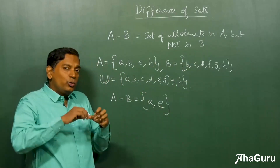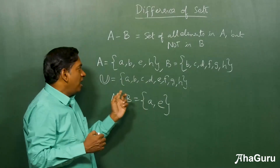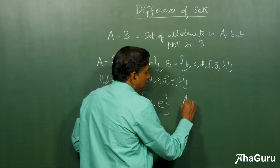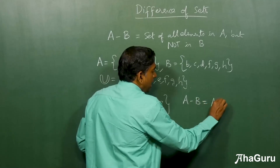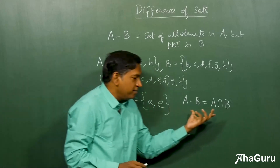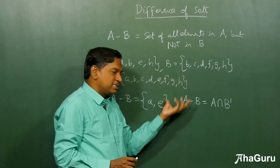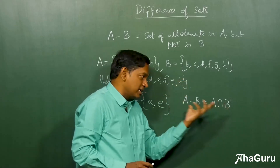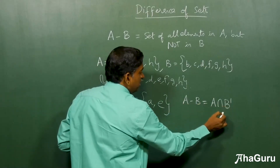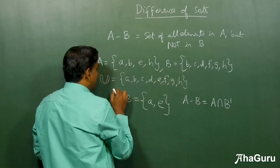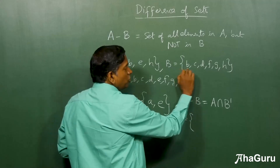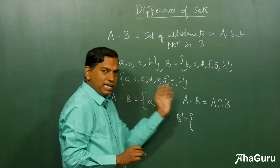Now when doing algebra of sets and we want to simplify, how do we simplify A minus B? We are going to show that A minus B is nothing but A intersection B-bar. We are going to demonstrate it with this example, and since it's general you can take this as a general result. To find A intersection B-bar, we first need B-bar. B-bar is the set of elements not in B but in the universal set.